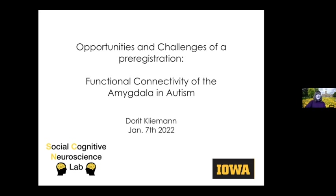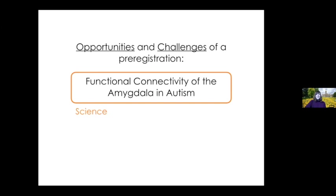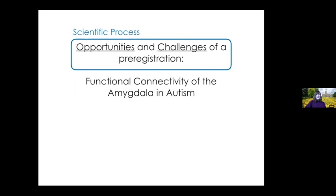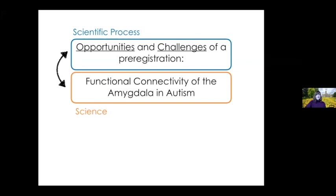Thanks everyone for having me. Today I'm very excited to talk about a project scientifically focused on the functional connectivity of the amygdala in autism. I also want to talk about certain aspects of the scientific process. We chose to pre-register, and that decision comes with opportunities, especially towards reproducibility, but also with challenges — before and during the pre-registration and while analyzing the data. How do we best precisely define our scientific hypothesis and test them? These are non-trivial questions, given the space of possible decisions in human neuroimaging.